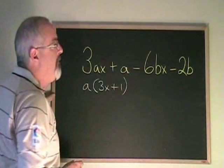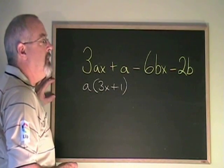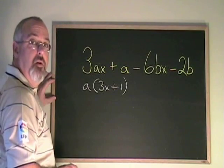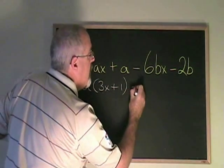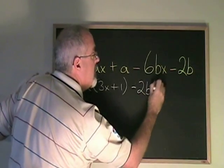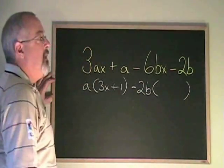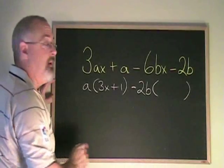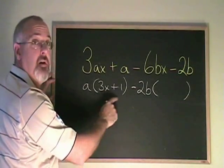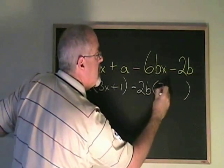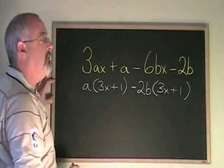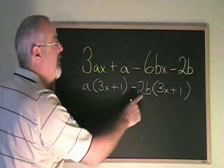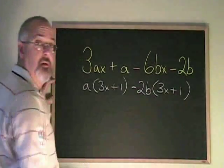Over here, the last two terms have a common factor of either negative 2b or positive 2b. If I factor out a minus 2b, what I will get inside the bracket will be the same as what I got over here, 3x plus 1. Minus 6bx divided by negative 2b is positive 3x. Minus 2b divided by negative 2b is equal to positive 1.